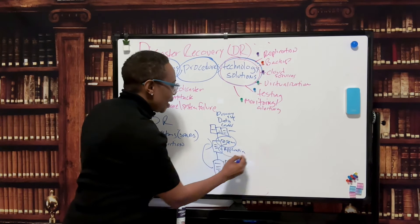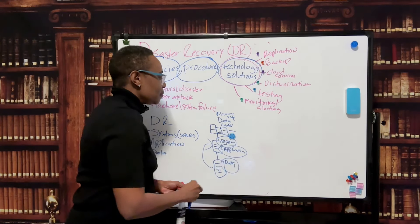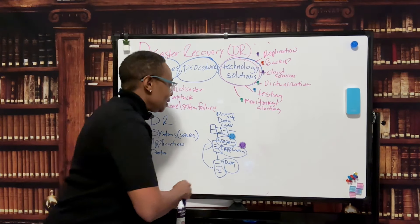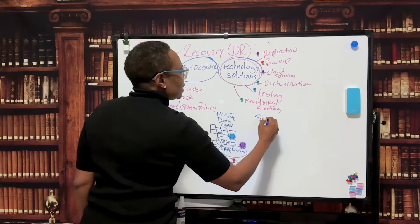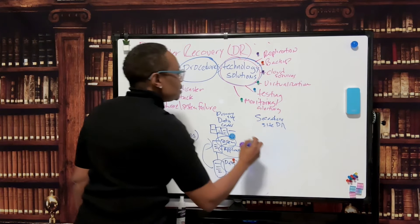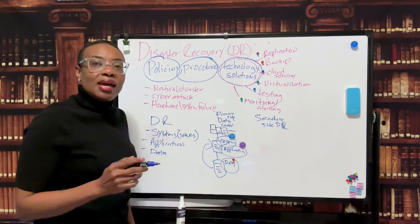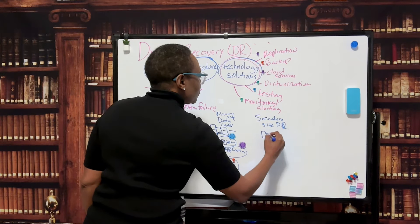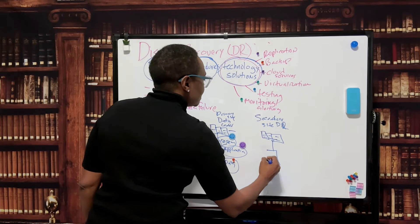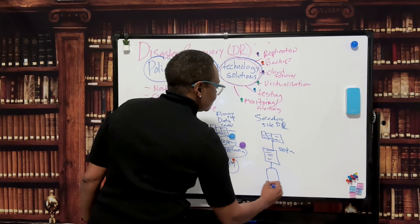So let's just mark these here. Okay, and then we have a secondary site. Okay, DR. And this secondary site needs to have the same systems, the same applications, and the same data in place. So we have a DR site, okay, also has a system or server, and it has data.